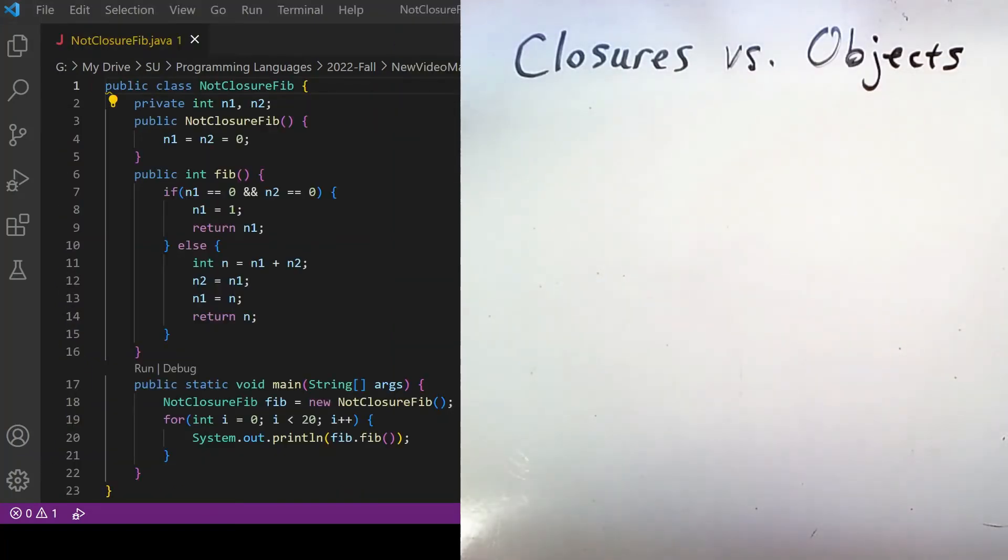So I'll end this video by pointing out that although closures are interesting, they're not really doing anything that you couldn't do in a different way using objects. So on the left I have some Java code, and here I'm simply instantiating an object that contains some local state and then calling a method repeatedly to get the result I want.